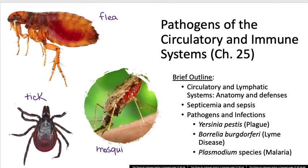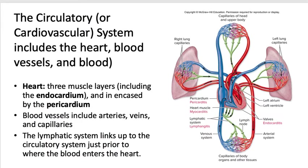As we cover each of these pathogens and the infections they cause, note the five important things, and under the additional information or extra fun facts, one thing to note will be the insect vector associated with each of these three infections. The circulatory system is also referred to as the cardiovascular system. Circulation refers to the function, which is to circulate nutrients and oxygen throughout the body. Cardiovascular refers to the anatomical structures.